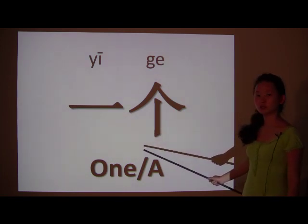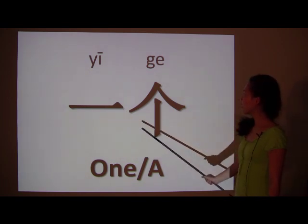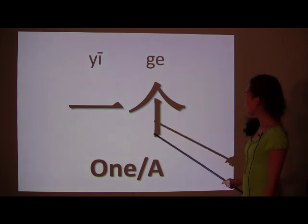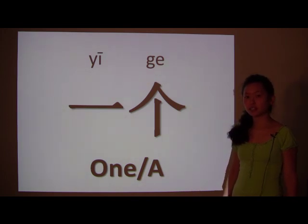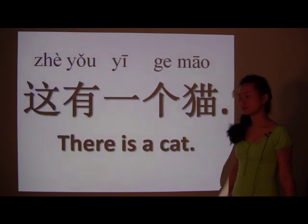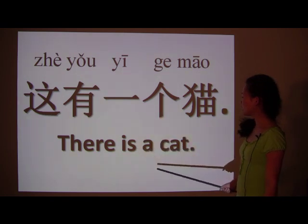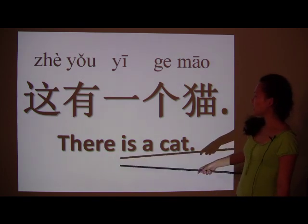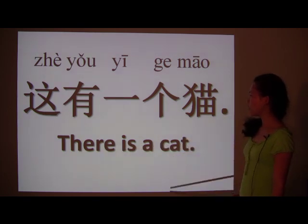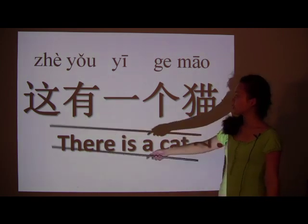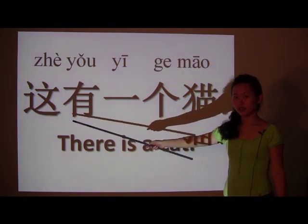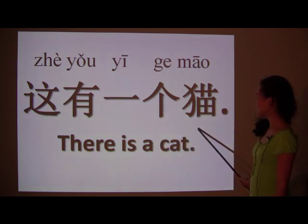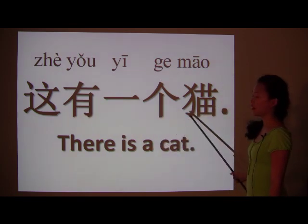个 is the term we use. So, together you say 一个. This is only for a general term. You can use this for almost anything when you're describing articles. Here is an example where we can use it in a phrase. If you say 'there is a cat' or 'here is a cat,' then you would say 这有一个猫 — here is, or there is, one cat.